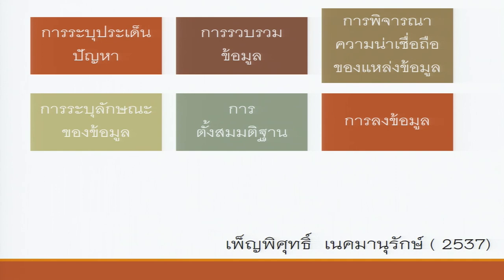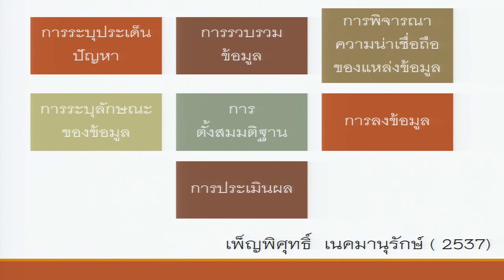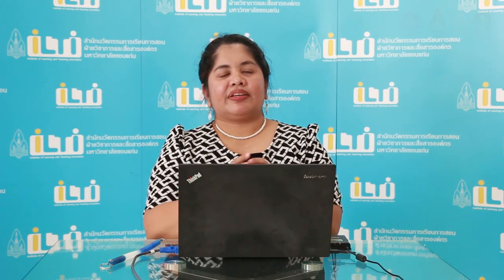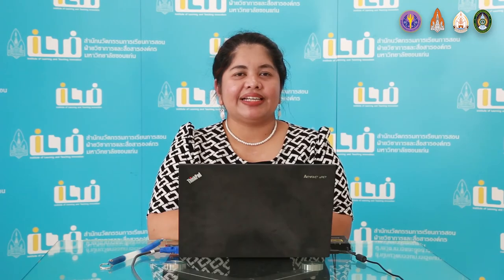องค์ประกอบ 7 วัด ในการพิจารณาความถูกต้องสมเหตุสมผลของข้อสรุป ซึ่งต้องอาศัยความสามารถในการวิเคราะห์และประเมิน อย่างรอบครอบ เพื่อพิจารณาความสมเหตุสมผล. This is the idea of thinking and thinking and thinking about it. Thank you.